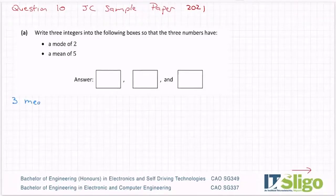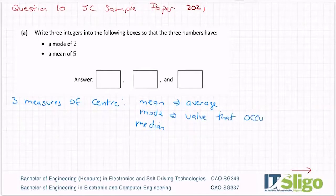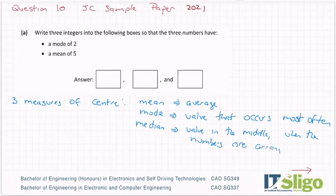There's three measures of center. There's the mean, the mode, and what's called the median. The mean is the average - add them all up and divide by the number of numbers. The mode is the value that occurs most often. Median is the value in the middle when the numbers are arranged in order. So there are your three measures of center and they all describe data for me.